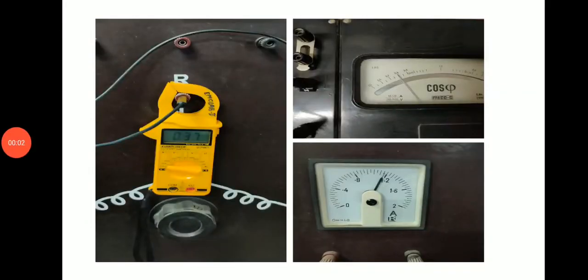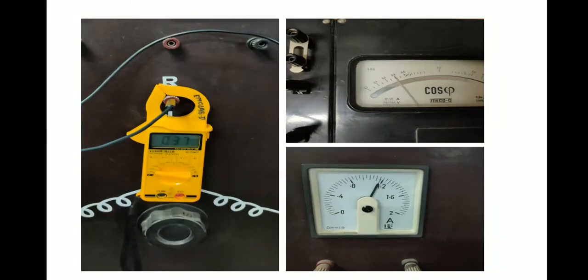As you can see when a DC excitation is provided to the field windings, the DC field current is around 1.2 amperes. The stator current is 0.37 amperes and the power factor is 0.8 lagging.